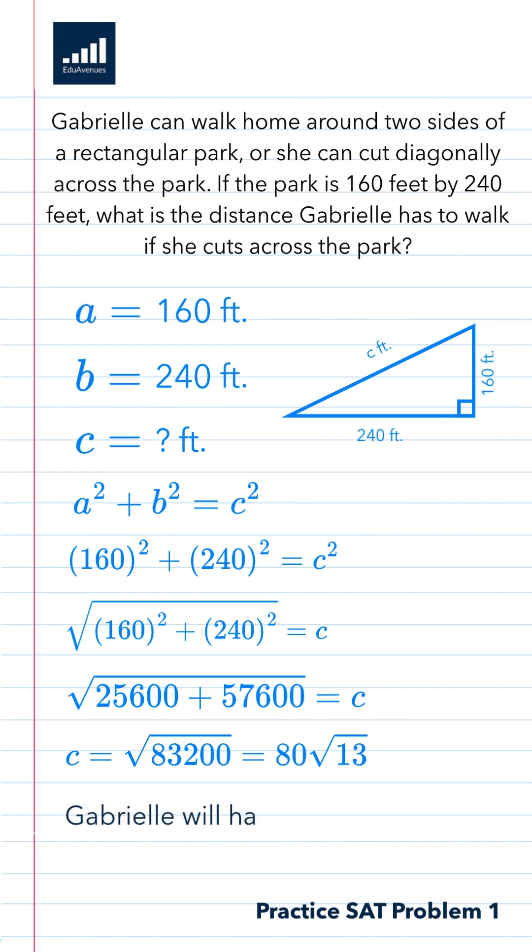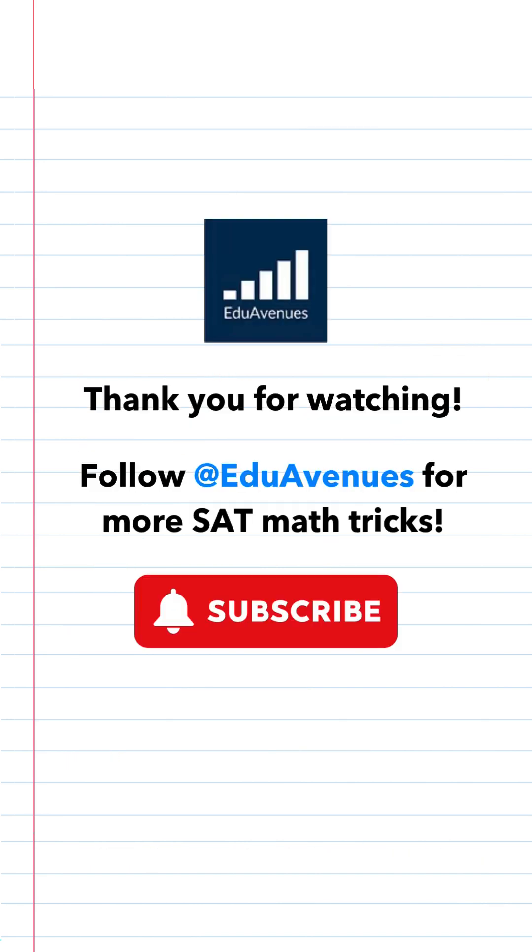So Gabrielle would walk 80 root 13 feet if she cuts across the park. Thank you for watching. Follow EduAvenues for more SAT math tricks.